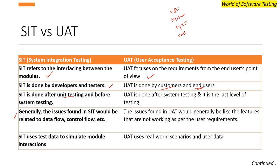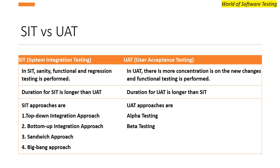Issues found in SIT are generally related to data flow or control flow. Issues found in UAT are generally features that are not working as per the user's requirements. SIT uses test data to simulate module interactions, while UAT uses real-world scenarios and end user data.